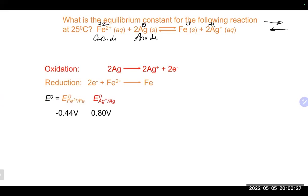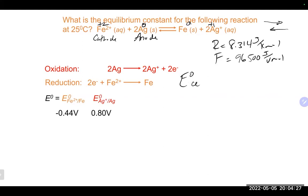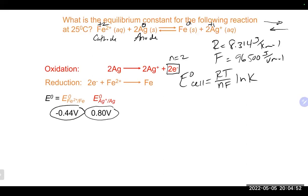We have the values given to us, so we calculate the equilibrium constant. The equation relating E of the cell and equilibrium is: E of the cell equals RT over nF times the natural log of K. From our balanced equation, n equals two - you don't want to add those together. One more time: we do not want to go by the table values alone; we want to go by what the equation shows us, because our silver is actually our anode and iron is our cathode.